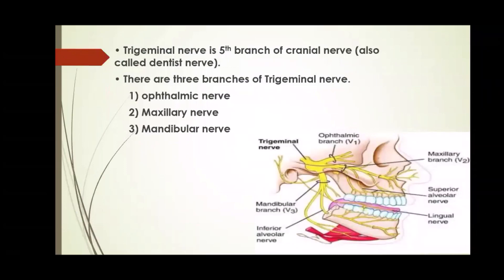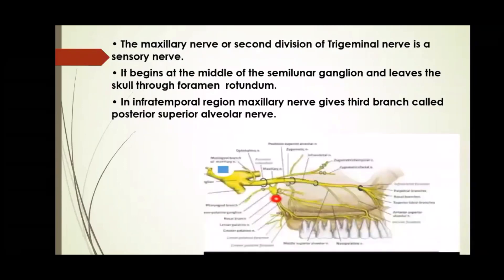The trigeminal nerve is the fifth branch of the cranial nerve, also called the dentist's nerve. There are three branches of the trigeminal nerve: first, ophthalmic; second, maxillary; and third, mandibular. The maxillary nerve, or second division of the trigeminal nerve, is a sensory nerve. It begins at the middle of the semilunar ganglion and leaves the skull through the foramen rotundum. In the infratemporal region, the maxillary nerve gives a third branch called the posterior superior alveolar nerve.